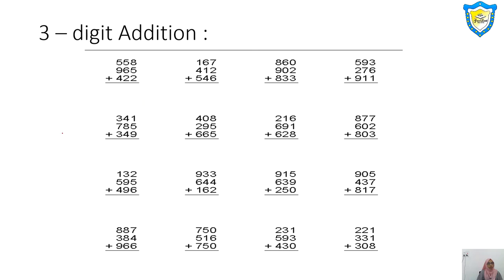Let me solve again carefully. 8 plus 5 is 13 — 5 down carry 1. Make a circle for 1. Then 5 plus 6: 5, 6, 7, 8, 9, 10, 11, 12, 13, plus 1 is 14 — 4 down carry 1. Then 5 plus 9: 5, 6, 7, 8, 9, 10, 11, 12, 13, 14, plus the carried 4 and another carry — 14 plus 4 gives 18, plus 1 is 19. So the answer is 1,945.